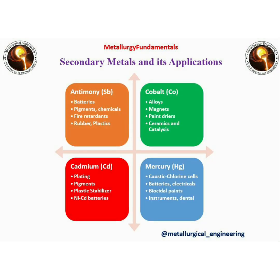Secondary metals are antimony, cobalt, cadmium and mercury. These metals are mainly byproducts of primary metals but also form their own deposits. Applications of antimony are in batteries, pigments, fire retardants, rubbers and plastics. Cobalt is used in making alloys, magnets, paint dryers, ceramics and catalysis.